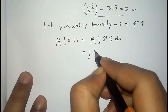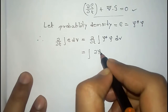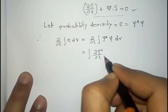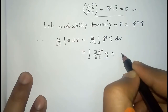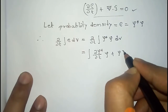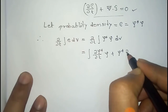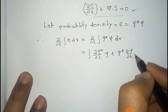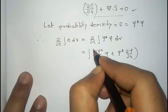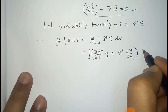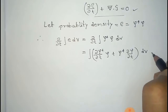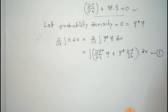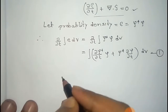Differentiating inside the integral, we get (∂ψ*/∂t)·ψ plus ψ*·(∂ψ/∂t) inside the integral. We take this as equation number one.